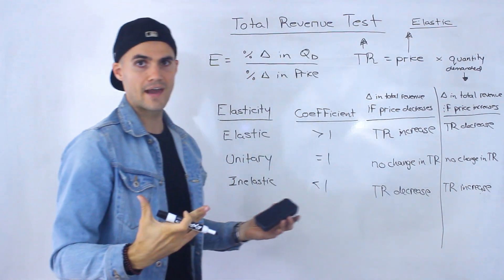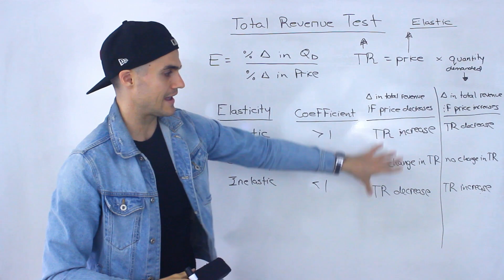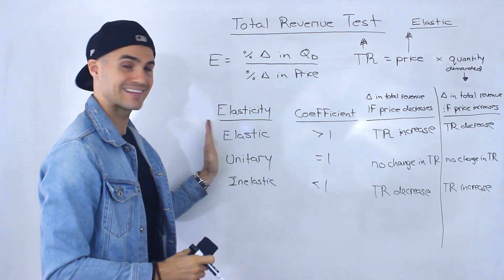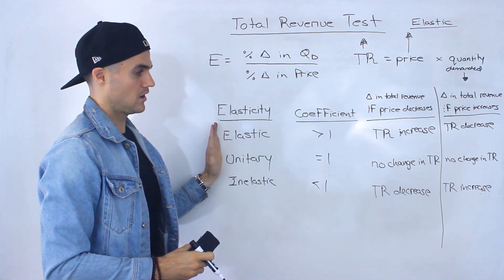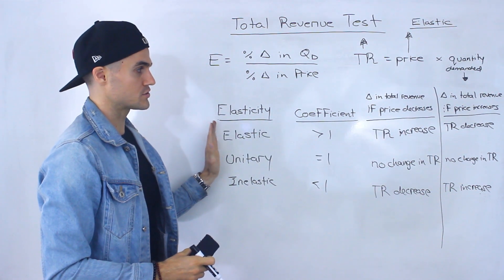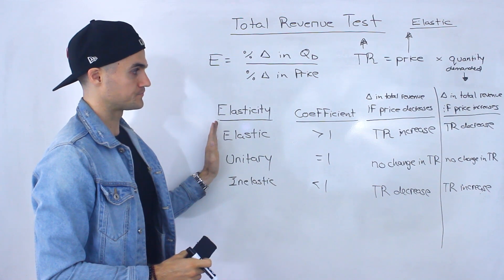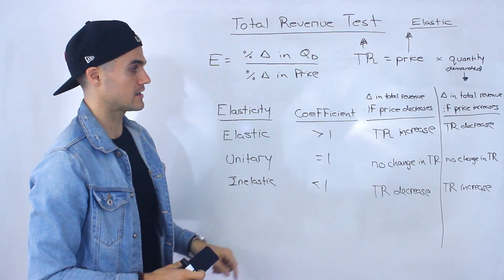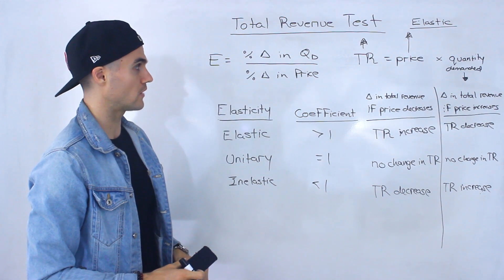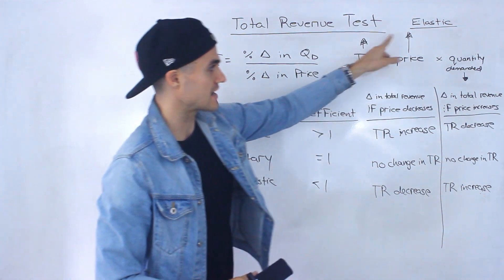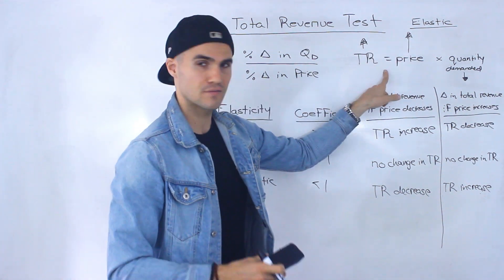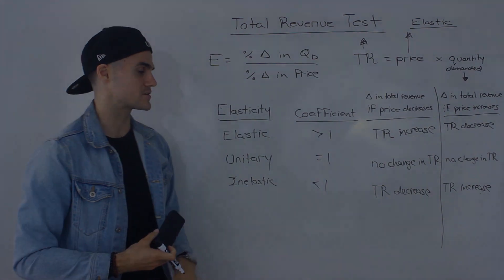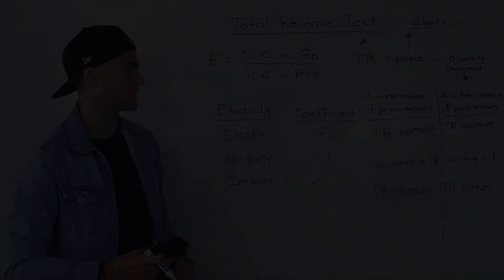And that's pretty much it. Those are the different cases depending on the elasticity of a good or service for the total revenue test. Hopefully these arrows helped you intuitively understand why these cases are happening.